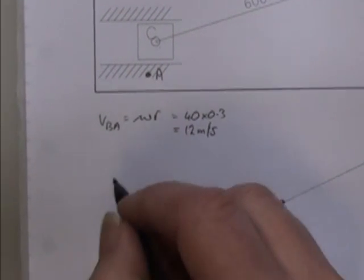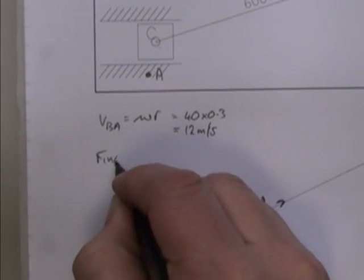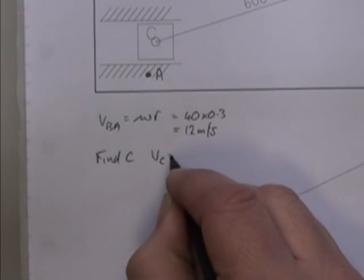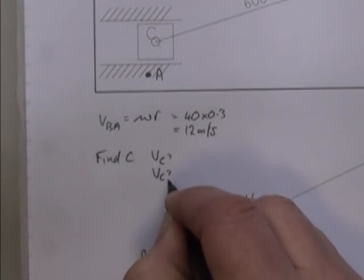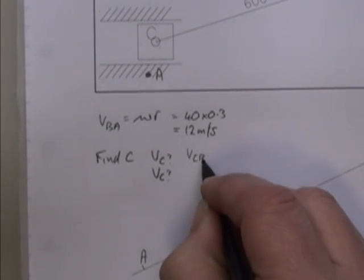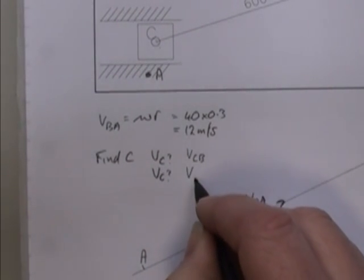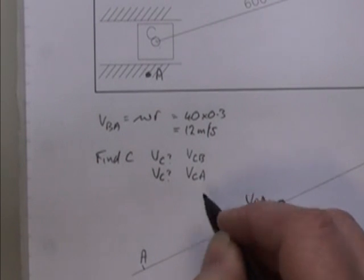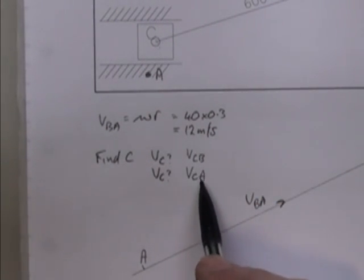So in these things, I now need to find C. I'm looking for VC something, and VC something else. We said C is joined to B, and C is constrained by A as well. So I'm looking for VCB and VCA.